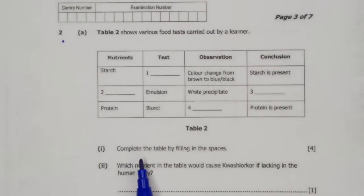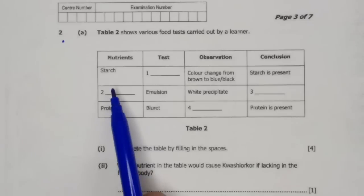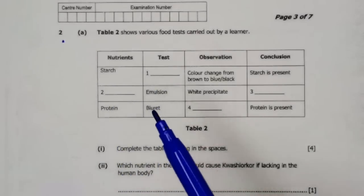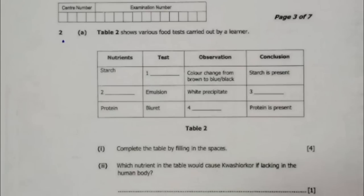Table 2 shows various food tests carried out by a learner. We have the test here showing nutrients, test, observation, and conclusion. A1: Complete the table by filling in the spaces.